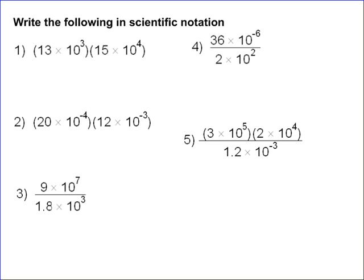All we have to do is multiply the non-powers of 10 together: 13 times 15, which gives you 195, and then the powers of 10 together. 10 to the 3rd times 10 to the 4th—you add exponents. Multiply with the same base means add exponents, so it's 10 to the 7th.